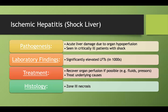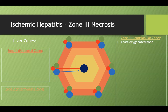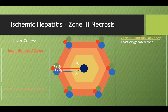On histology, you'll see zone 3 necrosis. Zone 3 is the least oxygenated zone because the proper hepatic artery carries oxygenated blood from the portal triad into the central vein, and as that blood diffuses through zones 1 and 2, oxygen is lost. So zone 3 is already relatively depleted in oxygen at baseline, making it most at risk when there's hypoperfusion.